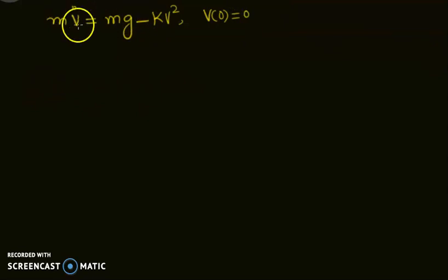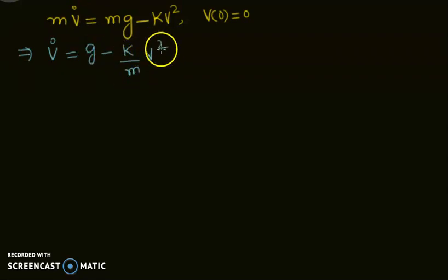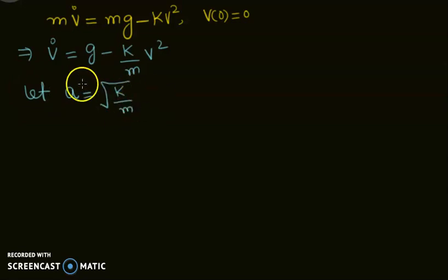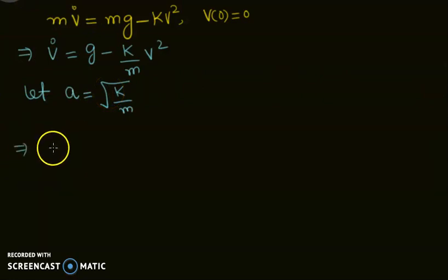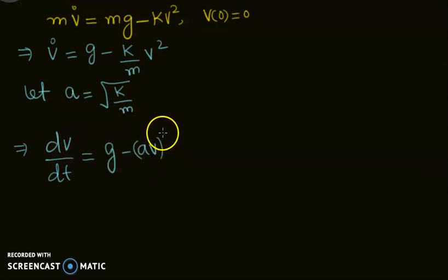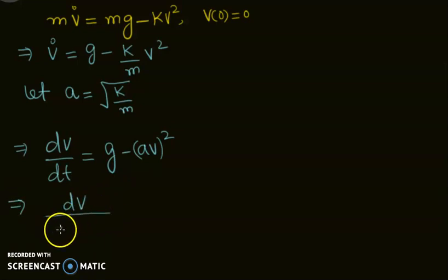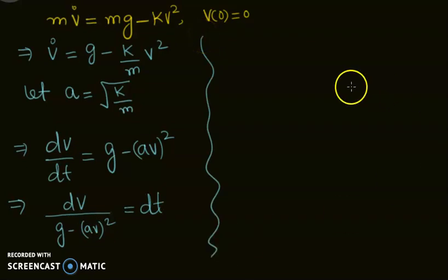We can use separation of variables. First we write the differential equation in the form dv/dt = g - (k/m)v². Let a = √(k/m) — this is just a substitution to make the equation more manageable; you don't have to use it if you're comfortable without it. This implies dv/dt = g - (av)², which after separation gives dv / (g - (av)²) = dt, and after integrating we proceed further.